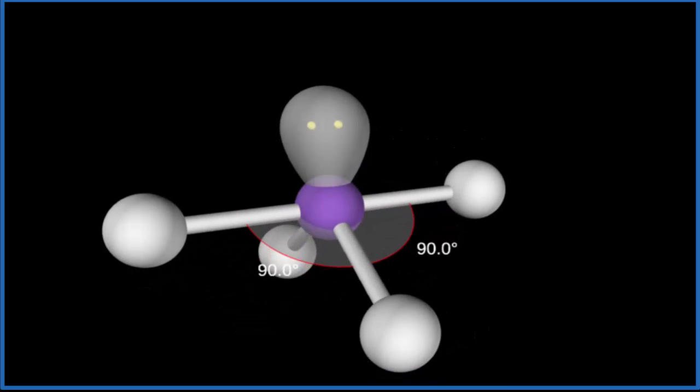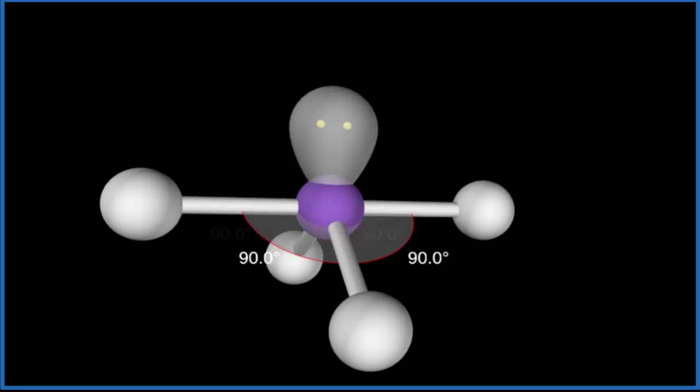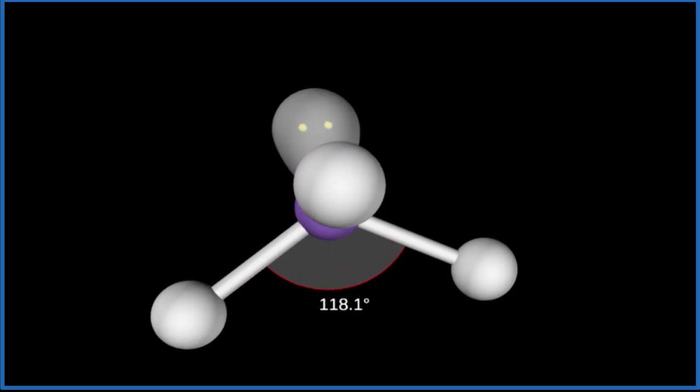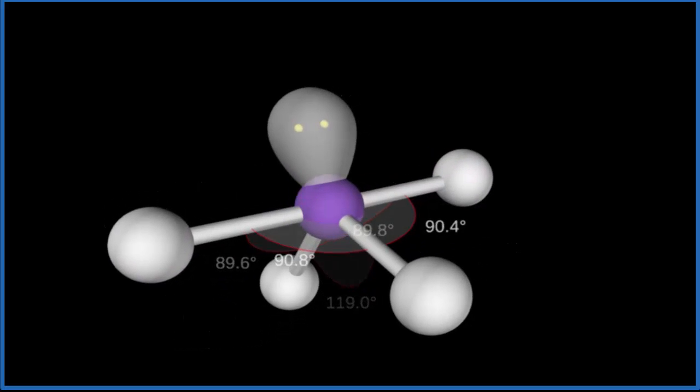So there are three different bond angles here. First of all, the straight line across, that would be 180. Then we have the 90 degree bond angles here between these atoms. But if we look at it kind of head on, we can see that we have this 120 degree here between these two fluorine atoms. So three different bond angles, kind of a little bit of work there.